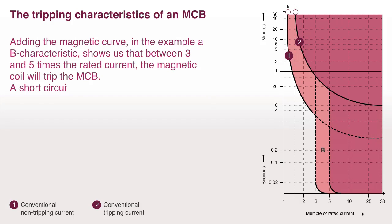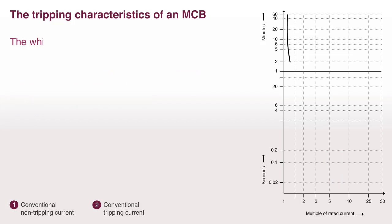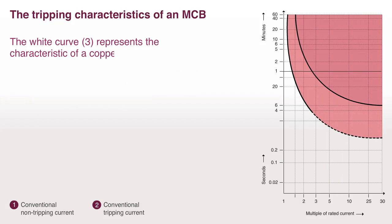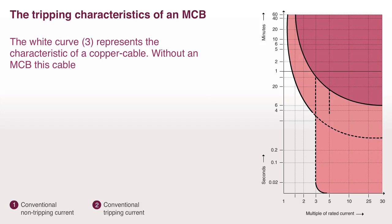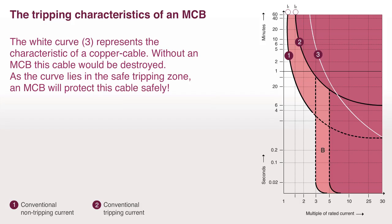A short circuit with a current of 5 times the nominal current will trip the MCB immediately. The white curve (3) represents the characteristic of a copper cable. Without an MCB, this cable would be destroyed. As the curve lies in the safe tripping zone, an MCB will protect this cable safely.